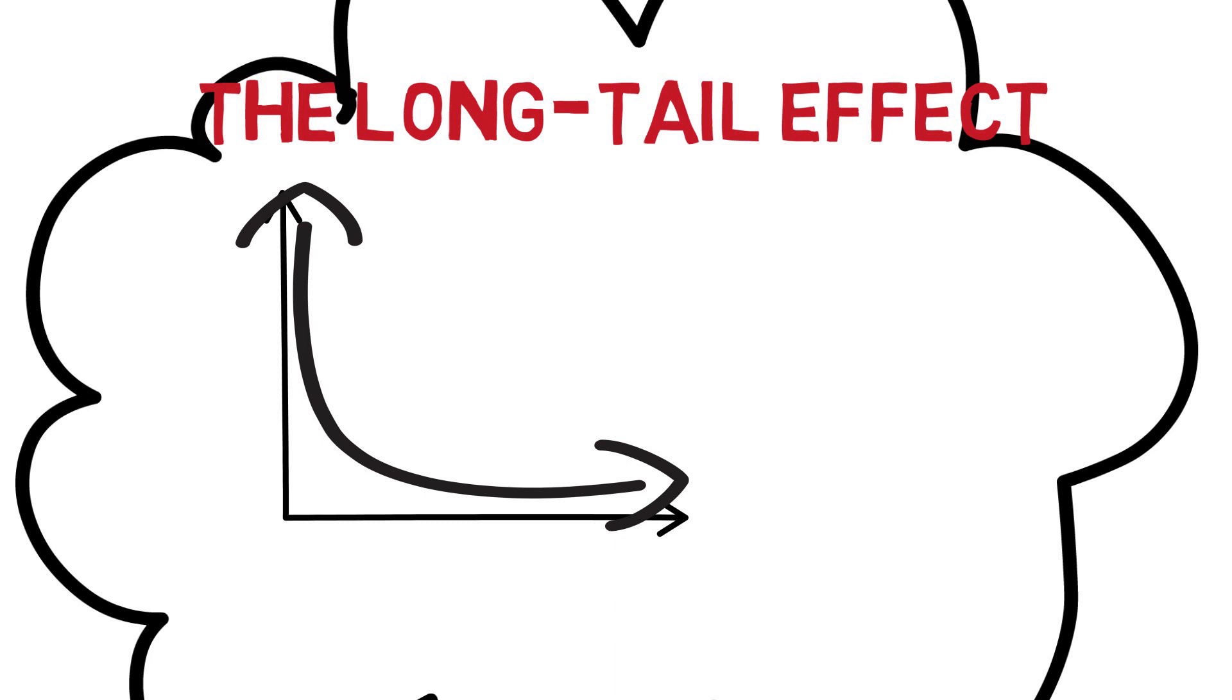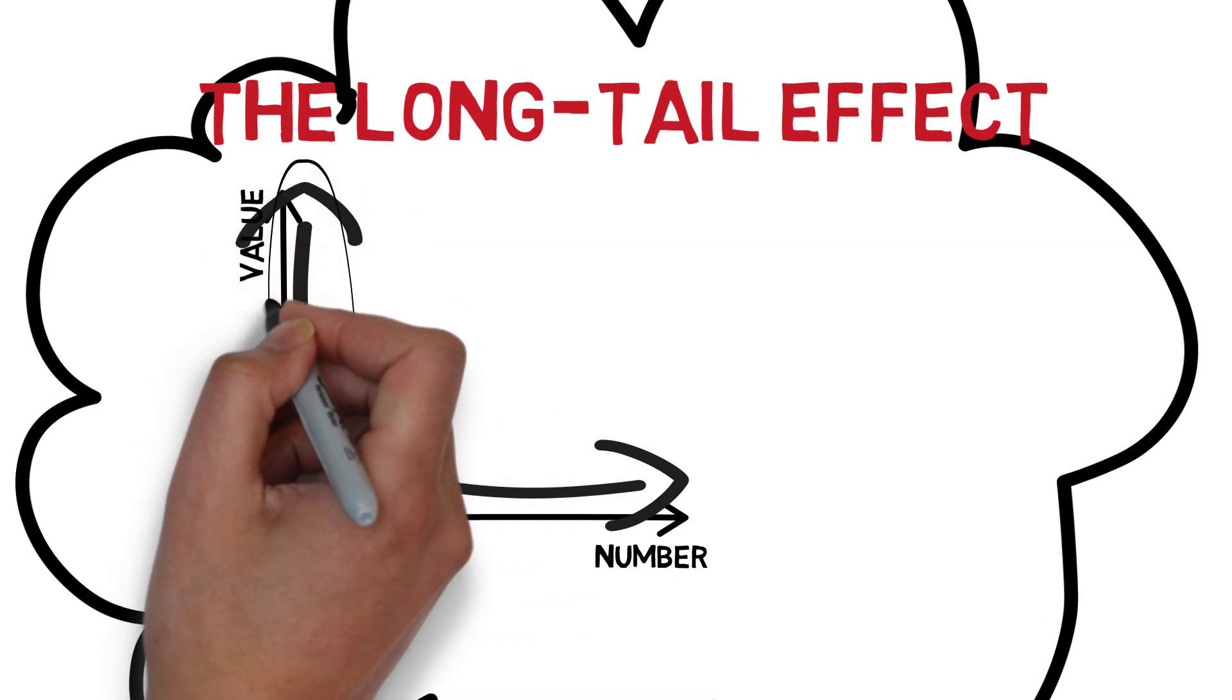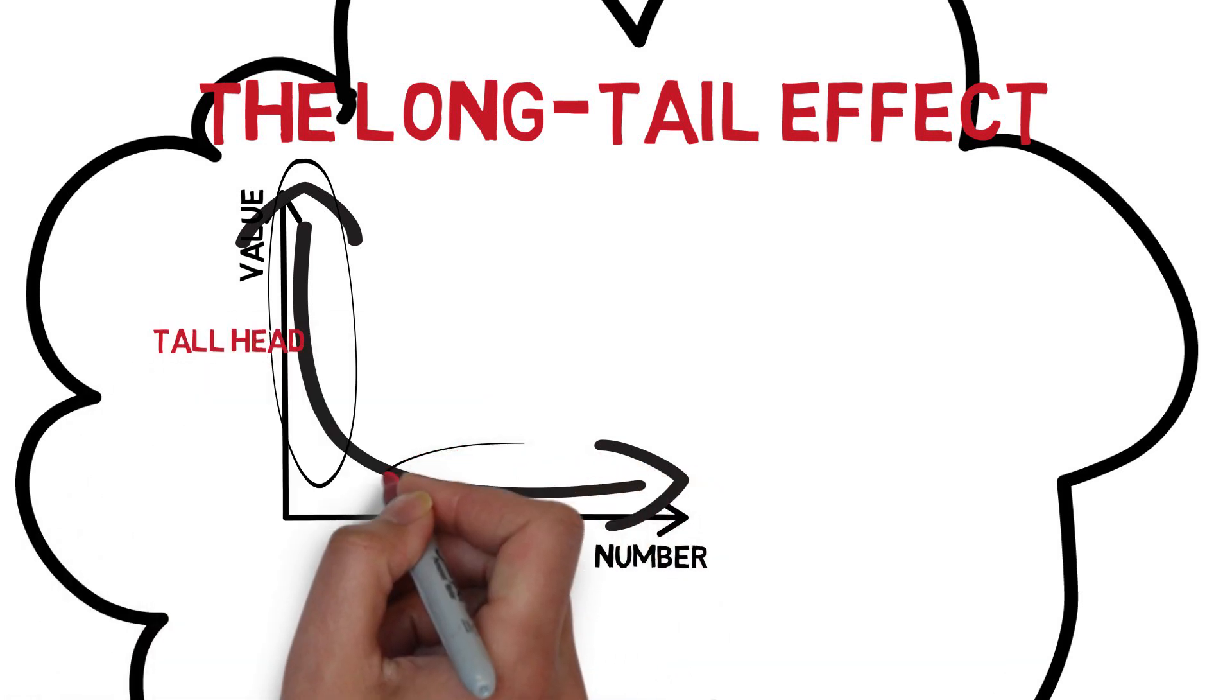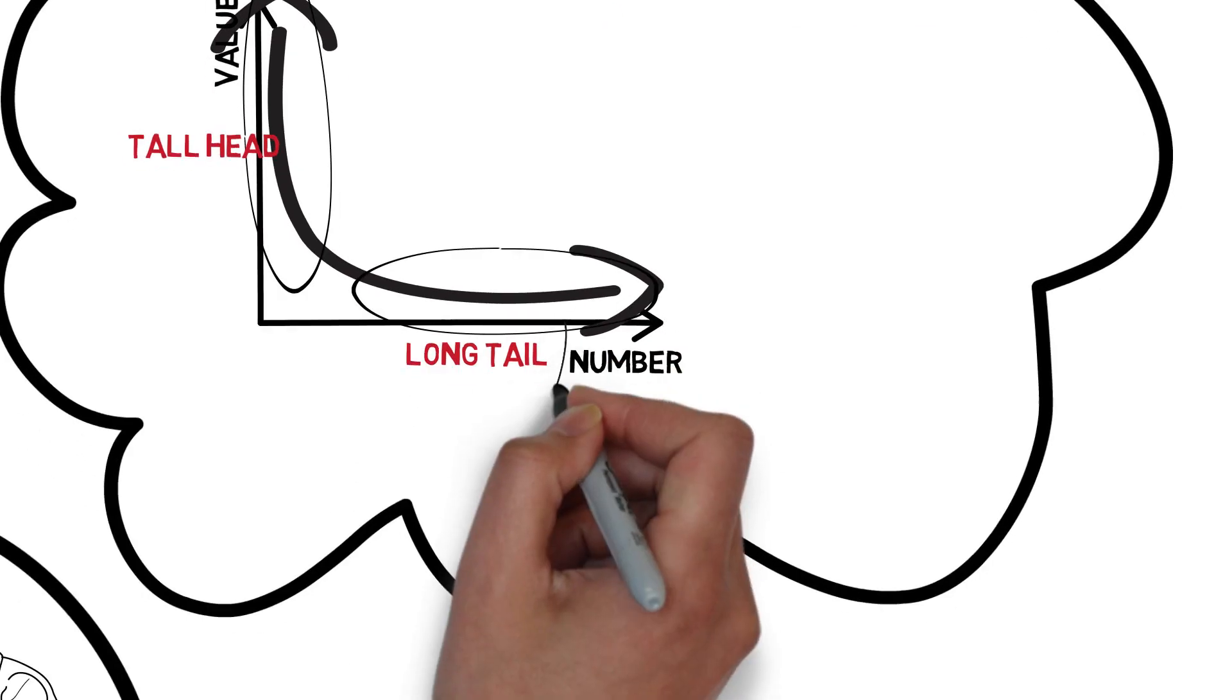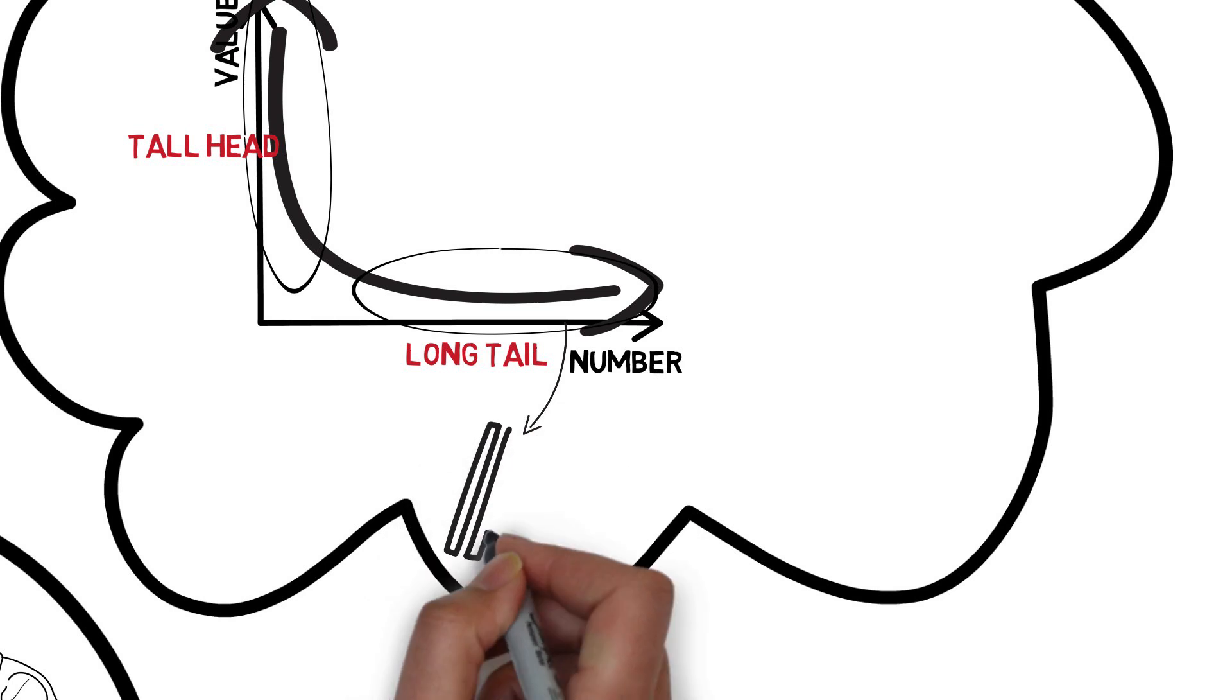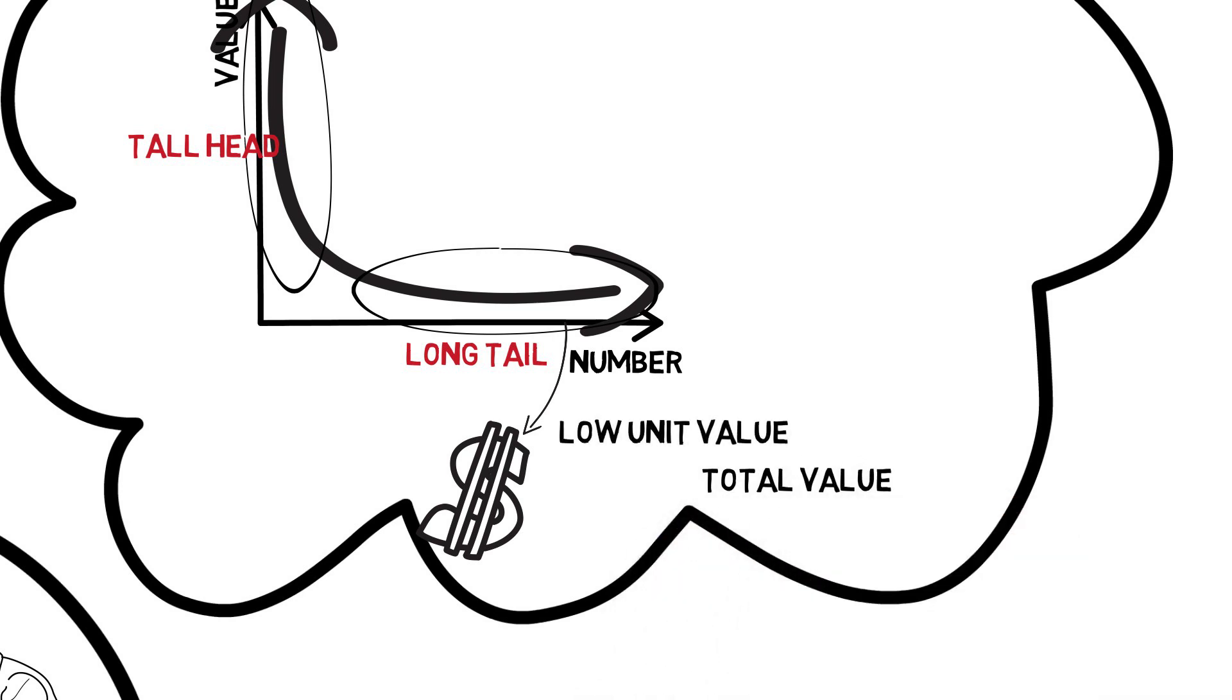While individuals with very low unit values account for the vast majority of the total, the portion of the symmetric curve near the longitudinal axis is called the tall head, while the part near the horizontal axis is called the long tail. The term long-tail effect emphasizes the commercial value of those individuals who account for the vast majority of data. Their individual values are extremely low, but the total value of this long tail cannot be underestimated.